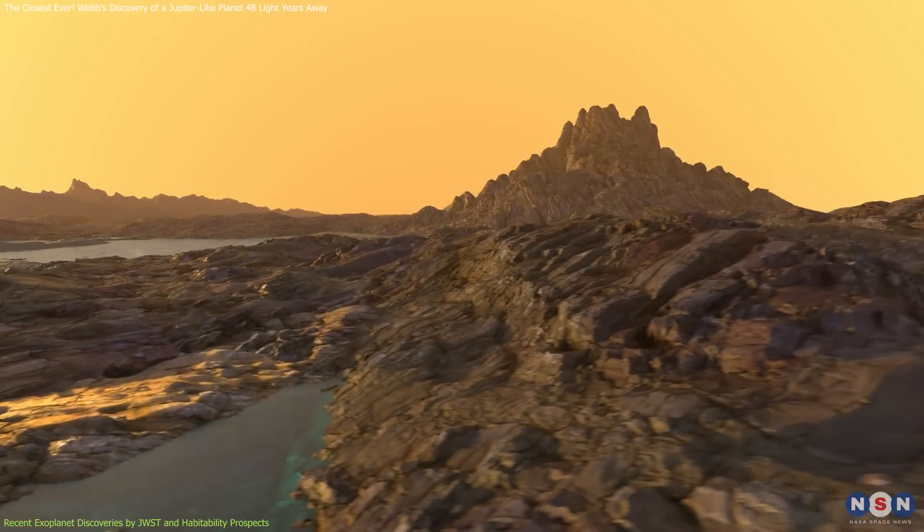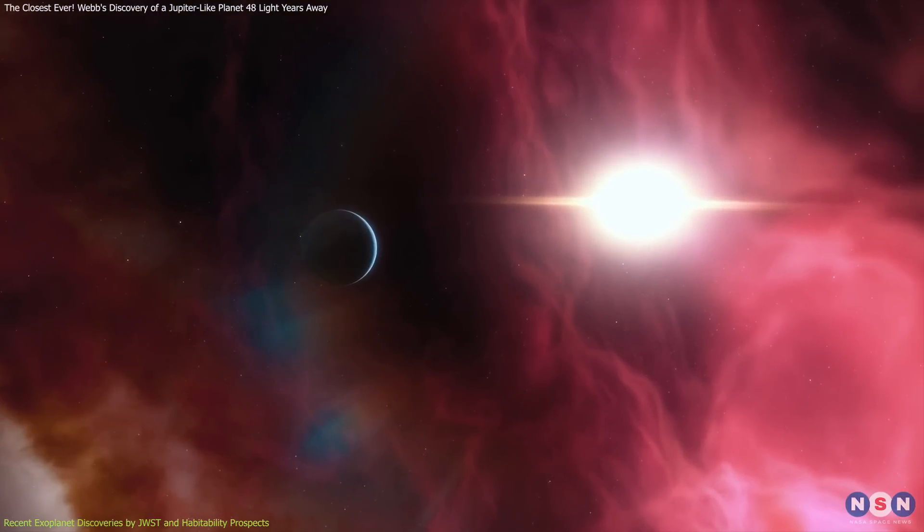For instance, a planet with a thick atmosphere rich in greenhouse gases might maintain surface temperatures conducive to liquid water, despite being far from the warm zone of its star.